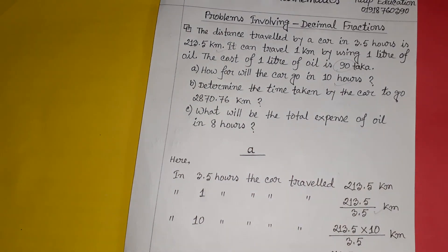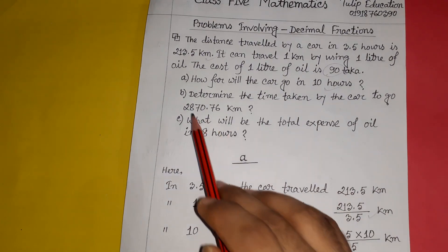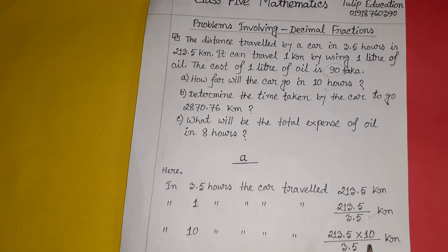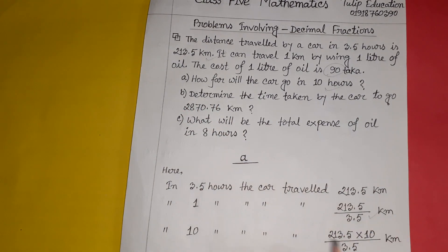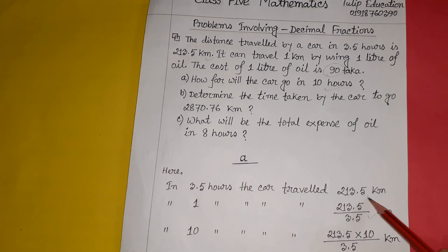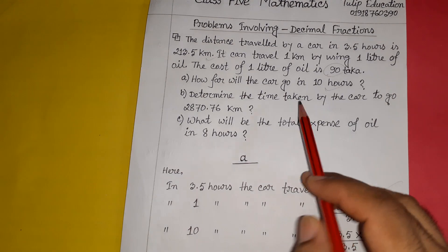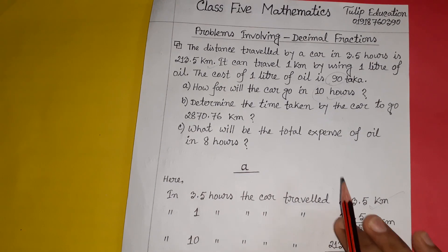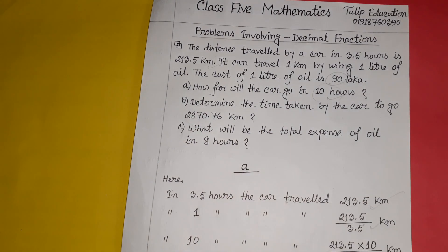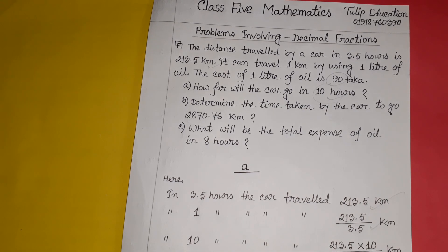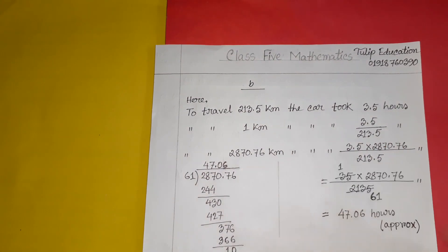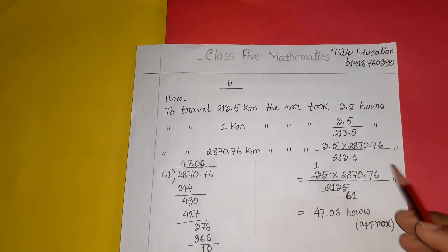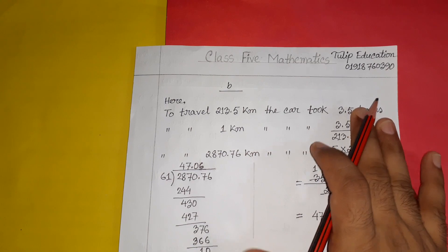Now for the second question: determine the time taken by the car to go 2870.76 kilometers. To solve this, we reverse the unitary method. In the original problem we had distance to find time, so here we reverse the setup. We know that to travel 213.5 kilometers it took 3.5 hours, so we write the reversed unitary line with distance on one side.